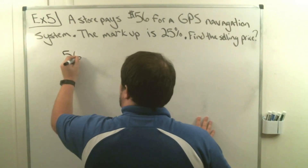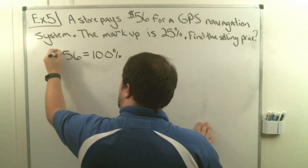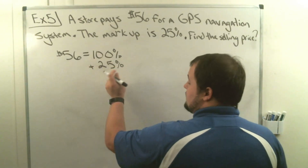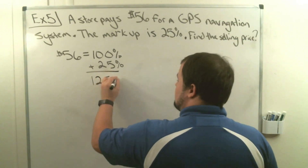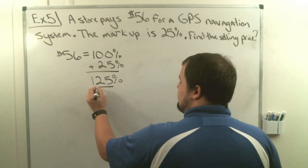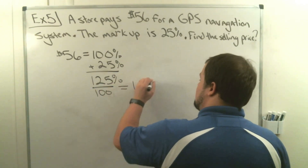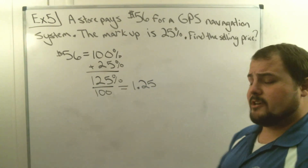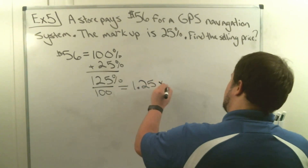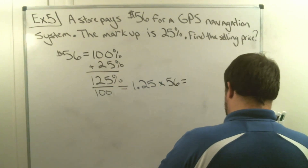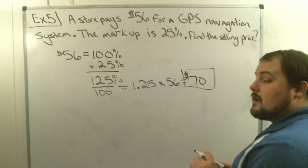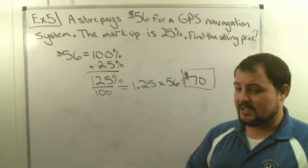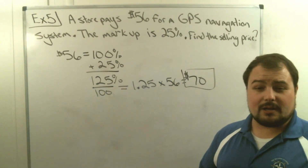We know $56 equals 100% of the price. They're going to mark it up by 25%, so we add 25% to get 125%. Taking 125 divided by 100 changes it to the decimal 1.25. Now we multiply our decimal by the purchase price: 1.25 times $56 equals $70. The store is charging an extra $14 for an item they paid $56 for — that extra money can pay wages or stock shelves.